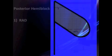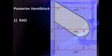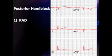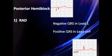Posterior hemi blocks are much less common, but just as simple to detect on EKG. Two things: number one, you must have right axis deviation. Not many things cause right axis deviation — we'll go over those causes later — but a key point is that to make the diagnosis, you must rule out those other causes first.